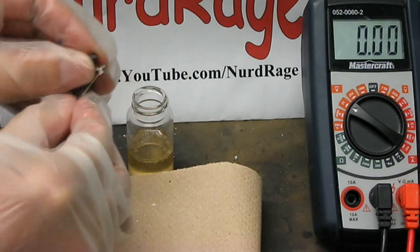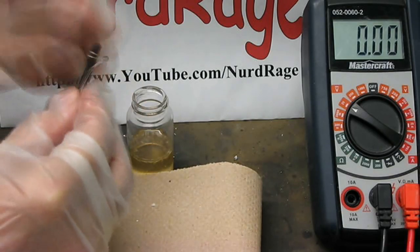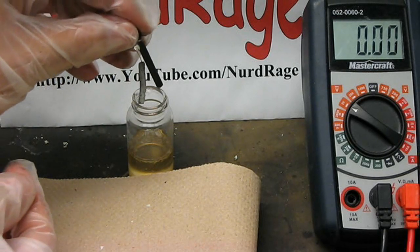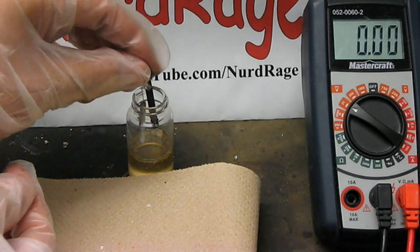Second, the other pin of the diode is wrapped around the carbon rod to make a connection. Now the assembly is dropped into the theonyl chloride solution.